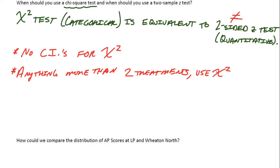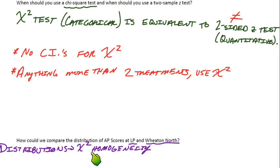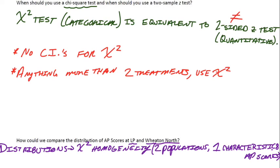The next question asks: how could we compare the distribution of AP scores at Lake Park and Wheaton North? In my mind, I think how many fives, how many fours, how many threes—what's the distribution of scores from 1 to 5 for the AP exam? To compare the distributions, let's use a chi-squared test for homogeneity. We have two populations, Lake Park students and Wheaton North, and we have one characteristic: the distribution of AP scores.